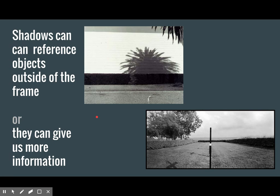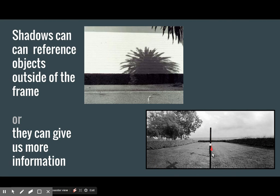Shadows can also reference objects that are outside of the frame. So if there was no shadow here and we saw this hanging down we wouldn't quite be sure what it was. But seeing this shadow we understand there's probably a palm tree just outside of the frame. Shadows can also give us more information. If we look at this image we first see this sliver of darkness and we're not quite sure what it is. However once we see the shadows on the ground we understand that these are crosses and perhaps this is a graveyard.